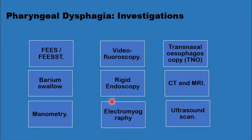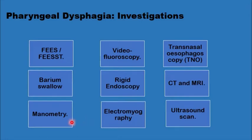Three additional investigations are used in selecting the method of treatment: ultrasound scans when injecting the cricopharyngeal muscle with Botox, electromyography, and manometry — which is used to determine whether the patient needs a cricopharyngeal myotomy.